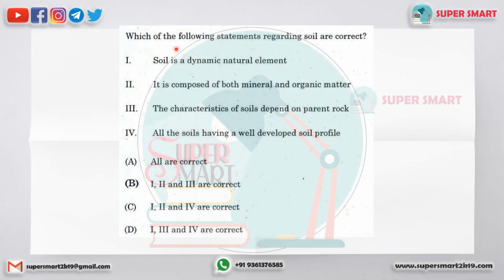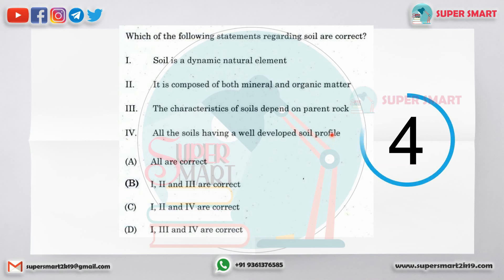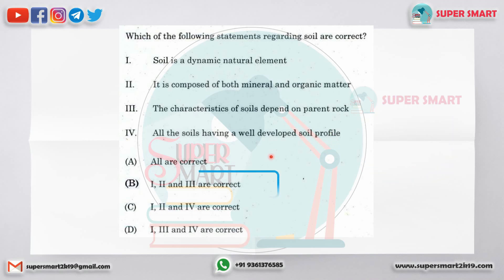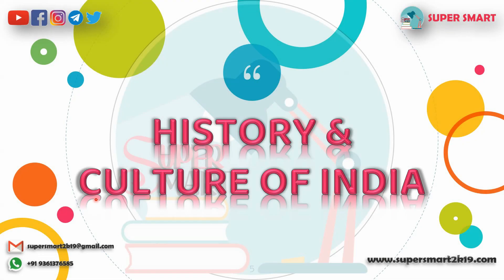Which of the following statements regarding soil are correct? Soil is a dynamic natural element. There are minerals and organic matter. It is parent rock dependent and has a well-developed soil profile. The answer is the third and fourth statements.